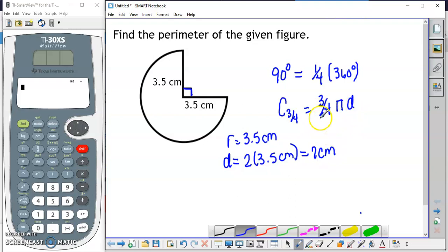So to find the circumference of the three-quarters of the circle that we need, we're going to do three-fourths times pi times 7 centimeters.